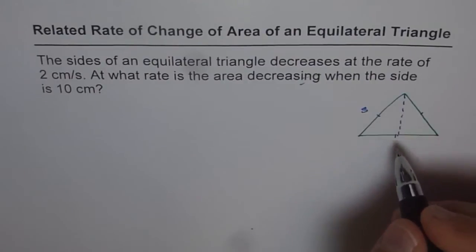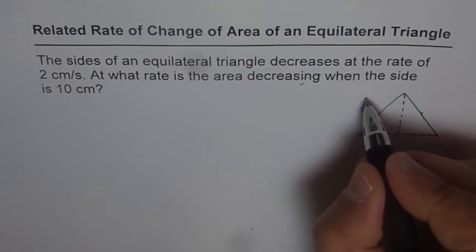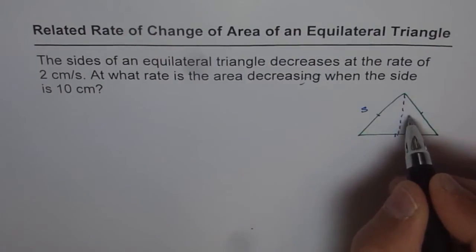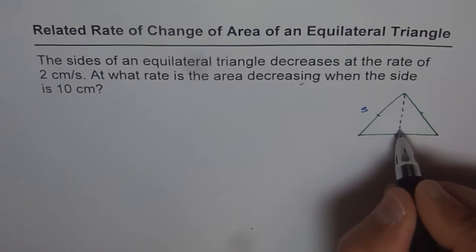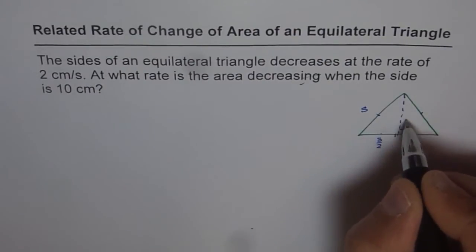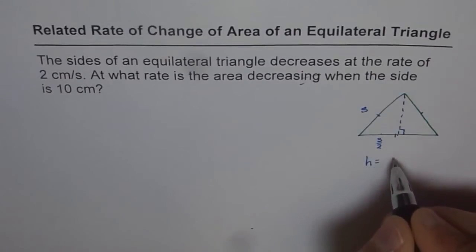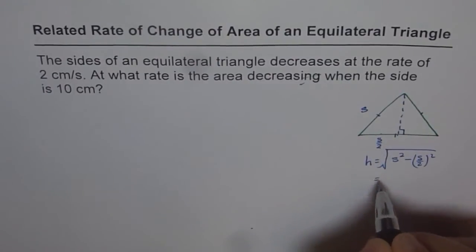Well, the height will be, as you know, your special triangles are in the ratio of 2 is to 1 is to square root 3. Or you can work it out like this. If this is S, this is perpendicular, this side should be S by 2. And therefore, height can be written as square root of (S² - (S/2)²).